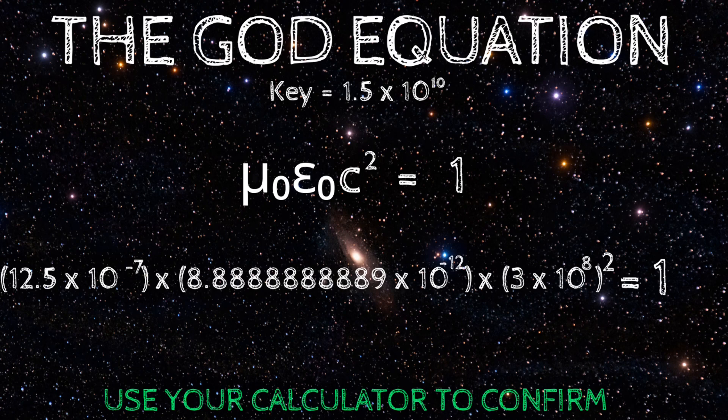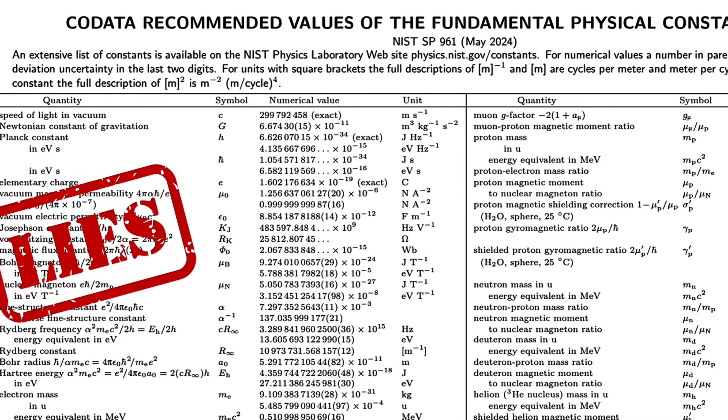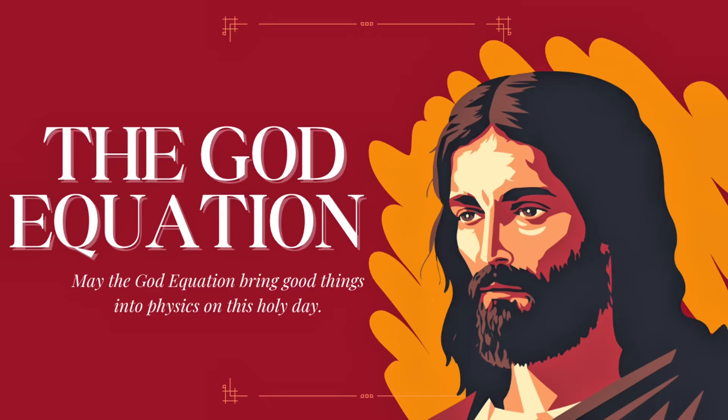To the viewers, you now see what the decisions of the physics community does to physics. The values from CODATA and other known sources from the past are a pack of lies, and you just watch the truth. Stay tuned for more YouTube short videos from the God Equation. There are still more use of the God Equation.